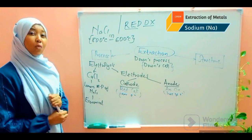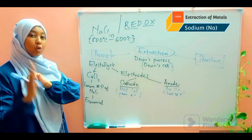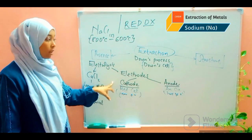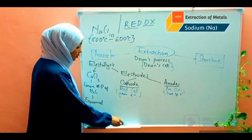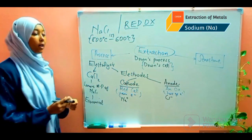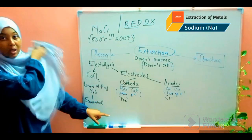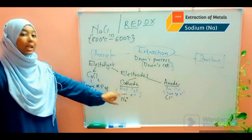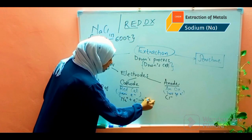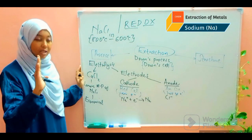We will now write the half equations for what happens at the cathode and at the anode. Sodium chloride dissociates into two ions: sodium ions, which are positively charged, and chloride ions, which are negatively charged. The sodium ions end up at the cathode, where they gain electrons and are discharged as sodium metal. A sodium ion gains one electron — the number of electrons gained or lost is determined by the charge of the ion.